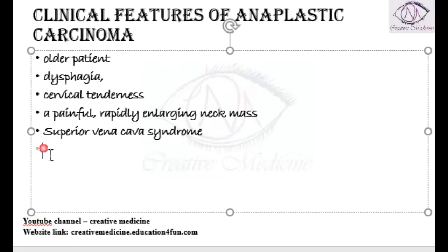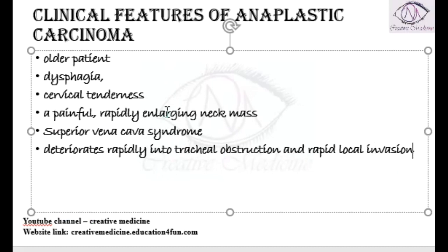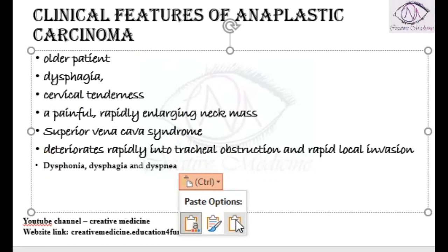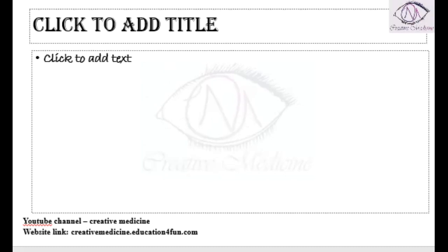The rapidly enlarging neck mass compresses surrounding structures. If it compresses the trachea, it can cause tracheal obstruction and local invasion. If it compresses the recurrent laryngeal nerve, it results in dysphonia or hoarseness of voice. Esophageal compression causes dysphagia, and tracheal compression leads to dyspnea.